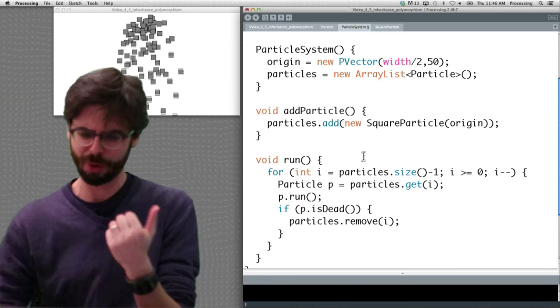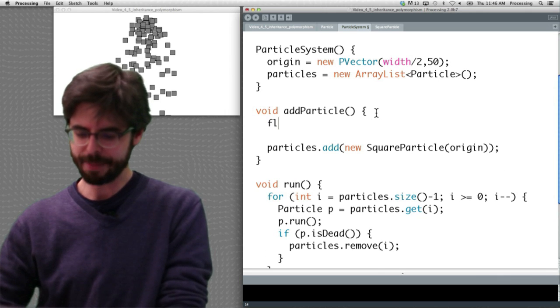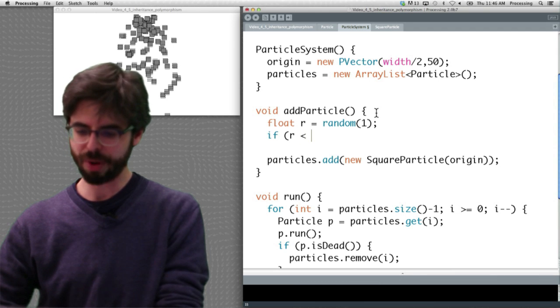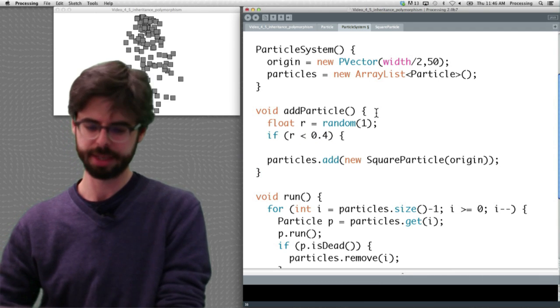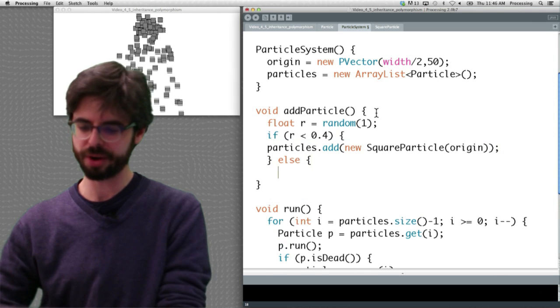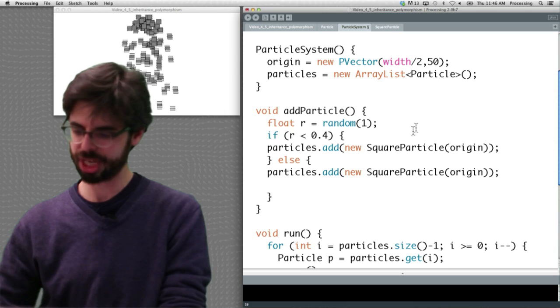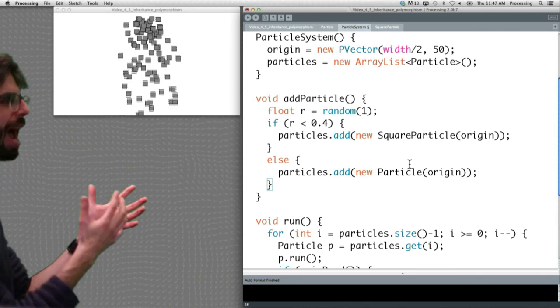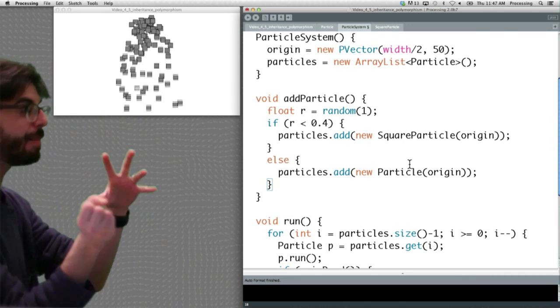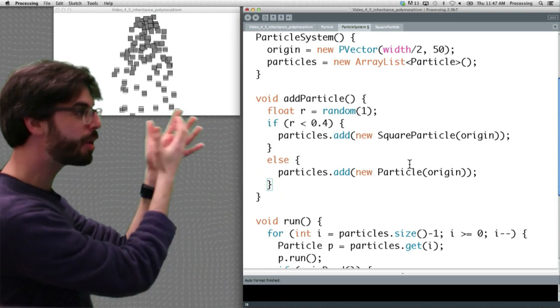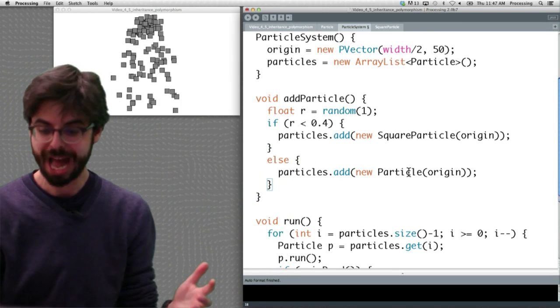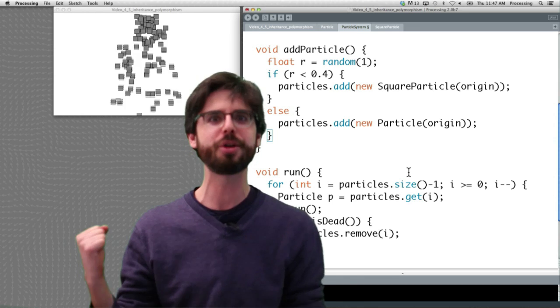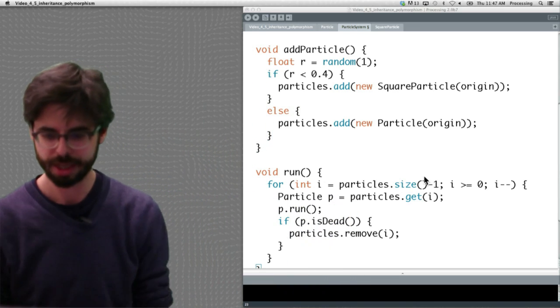But let's really prove to ourselves that this is working. I'm going to pick a random number between 0 and 1, and I'm going to say if that random number is less than 0.4, there's a 40% chance of me adding a square particle, and a 60% chance of adding a regular particle. I am not keeping track of which particle is square, which particle is random. I'm just randomly adding, sometimes a square particle, sometimes a regular particle. And when I loop through the particles, they're all just particles. But when I call display, the square particle is going to know to be a square, the regular particle is going to know to be a circle.